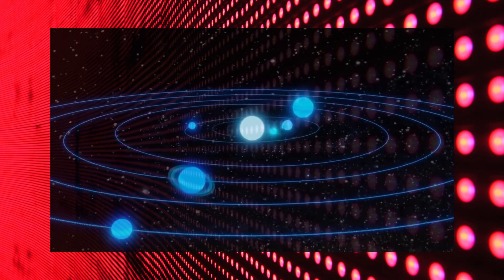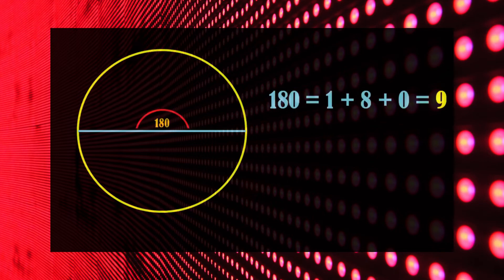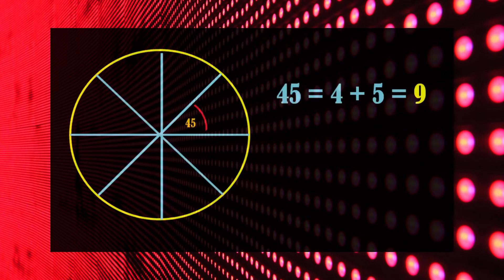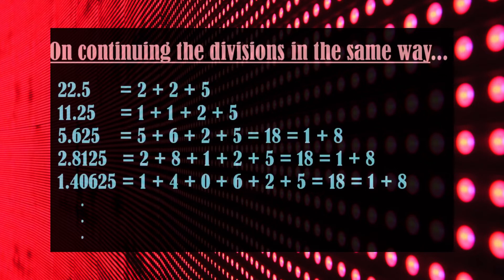Now let me show you how powerful the number 9 is and how it is present everywhere in the universe. Let's start dividing a circle and see the sum of digits of the resulting angle. A full circle makes an angle of 360 degrees at its center — adding the digits of 360, we get 9. A semicircle makes an angle of 180 degrees, which again adds up to 9. Dividing again, we get 90 degrees — it's 9 again. Unbelievably, you will get number 9 as the digital root every time even on repeating the same process infinitely.